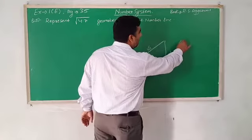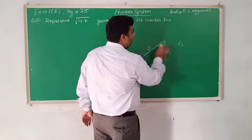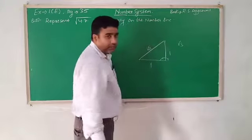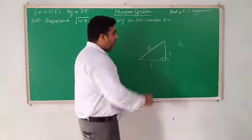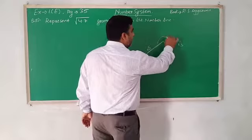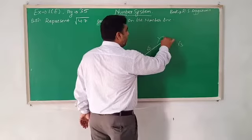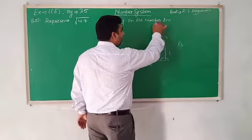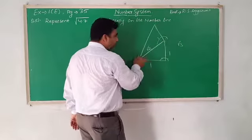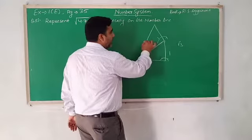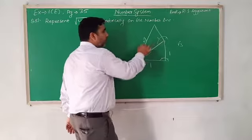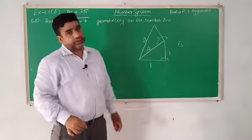If I want to make root 3, first I make root 2, then at the end of root 2, I make a 90-degree angle with one unit perpendicular. When I join these, it will be root 3, and so on.